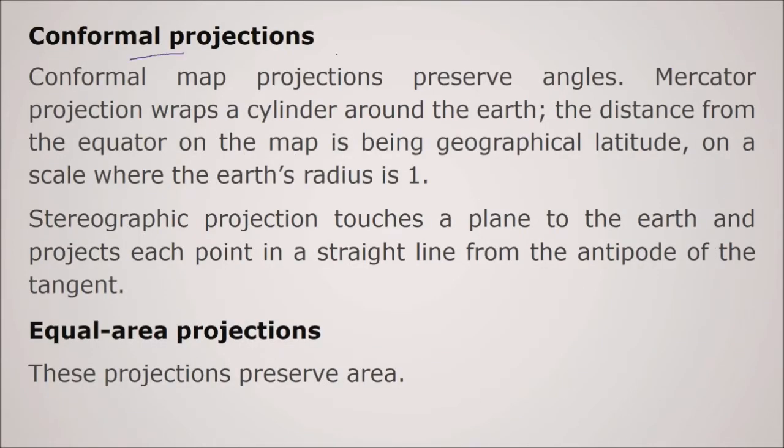Azimuthal conformal projection is the same as the stereographic projection we are going to see. Conformal projections, we have another projection. The map projection preserves angle. This preserves the angle. So the Mercator projection wraps a cylinder around the earth and the distance from the equator on the map is being the geographical latitude on a scale where the earth radius is 1.